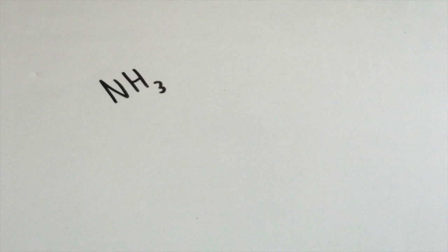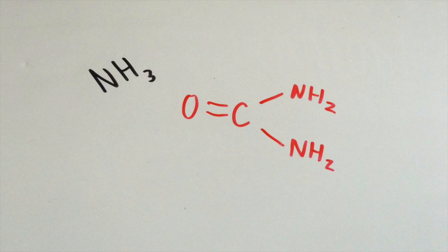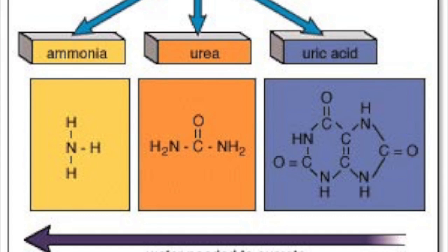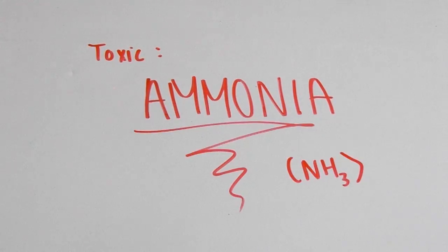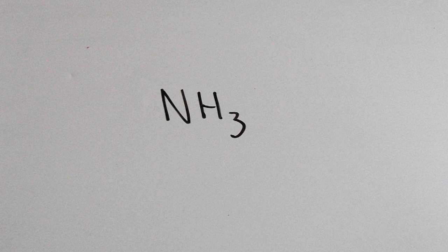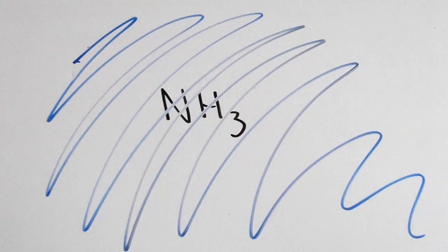The breakdown of proteins and nucleic acids from food results in these wastes, such as ammonia, urea, and uric acid. Ammonia is the most toxic form, while uric acid is the least toxic. Because ammonia is very toxic, it requires a lot of water to be excreted along with it.